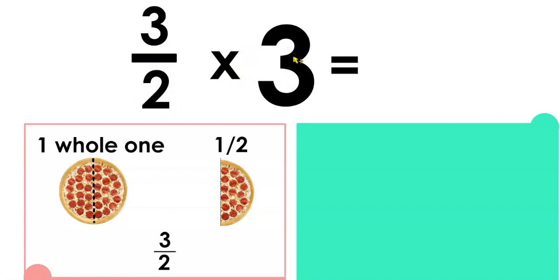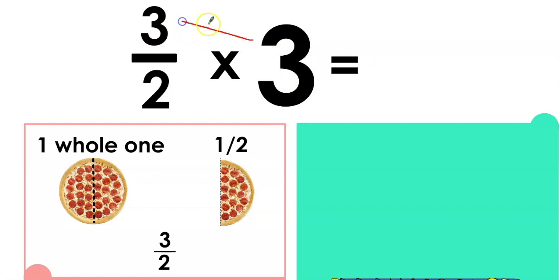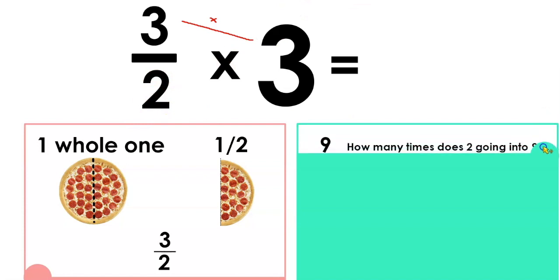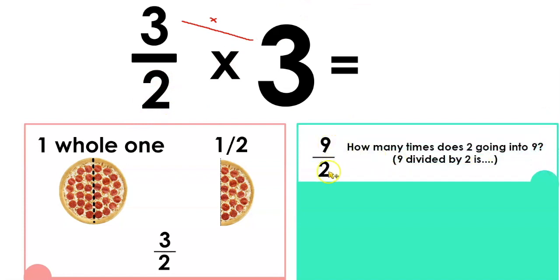We're going to multiply three halves by three. The easier way of doing it is just to multiply the three whole ones by the top number — so multiply this number and this number together. Three times three equals nine, and we keep the bottom the same. So the answer so far is nine out of two — three threes are nine, and two stays the same, so it's nine over two, or nine halves.